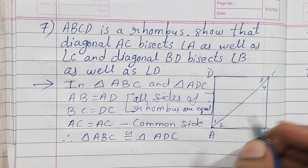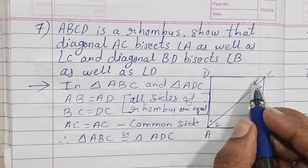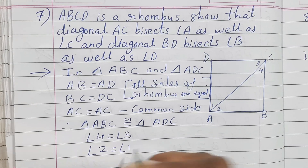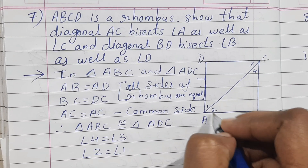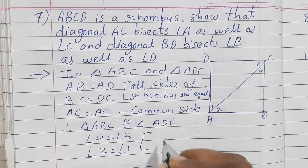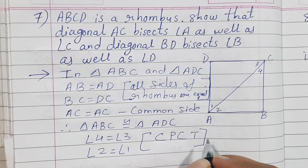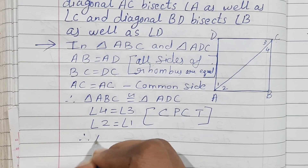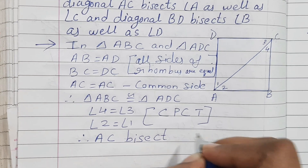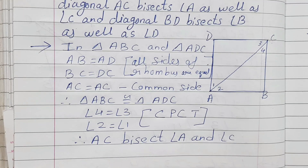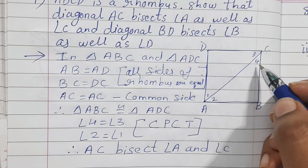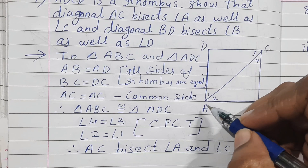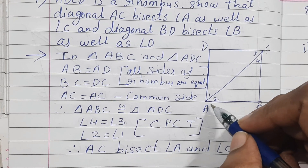Now I can say angle 4 is equal to angle 3, and angle 2 is equal to angle 1 — by CPCT (Corresponding Parts of Congruent Triangles). Since 1 equals 2 and 3 equals 4, therefore AC bisects angle A and angle C. When angle 4 equals angle 3, AC is bisecting at angle C, and when angle 1 equals angle 2, AC is bisecting at angle A.